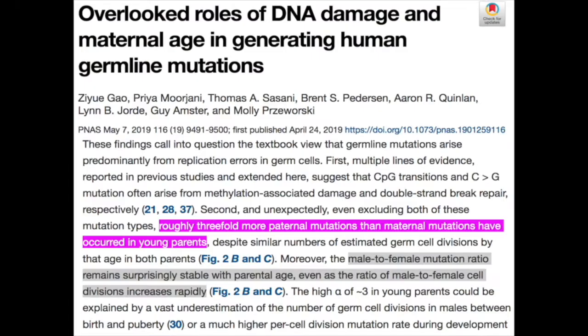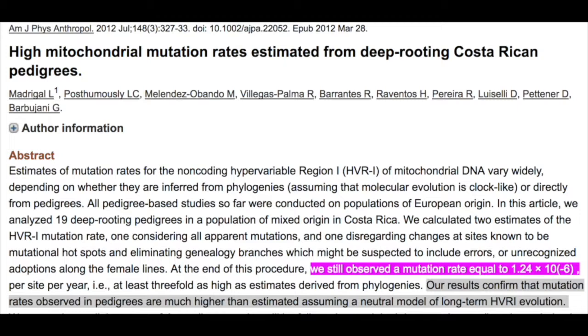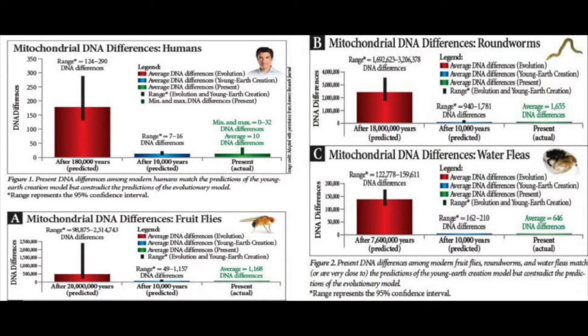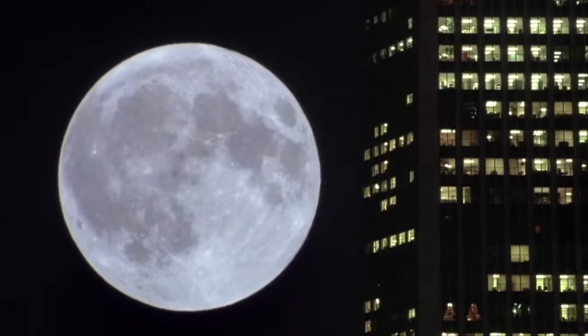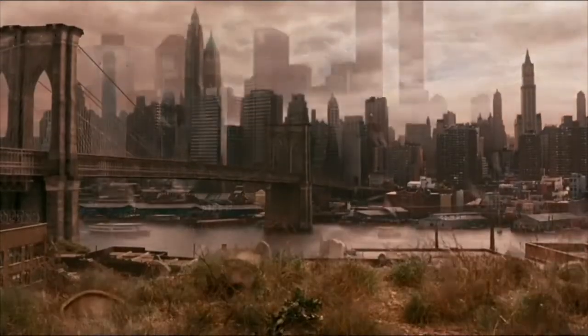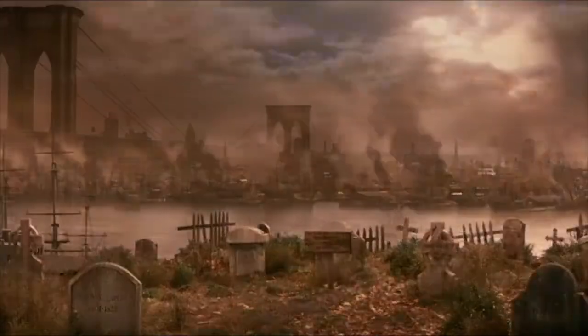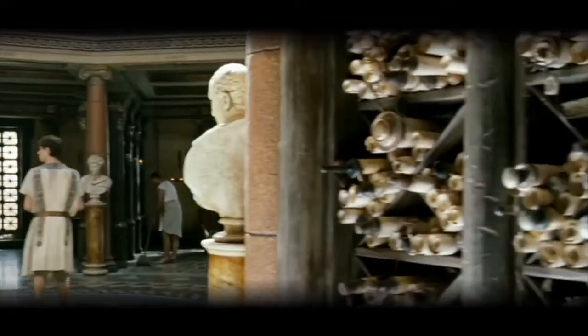The total number of paternal mutations increases with a father's age at conception. Regardless, the clock is constant and consistent, making it a great tool for testable and falsifiable predictions. This is exactly what Young Earth Creationist Dr. Nathaniel Jensen has done — he has multiple mitochondrial DNA rate predictions, all of which have been validated. It is logical to conclude that going back in time you end at a point of zero mutations, which begins with biblical Adam and Eve.